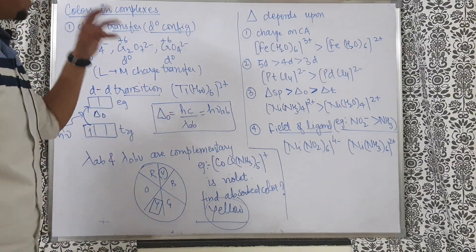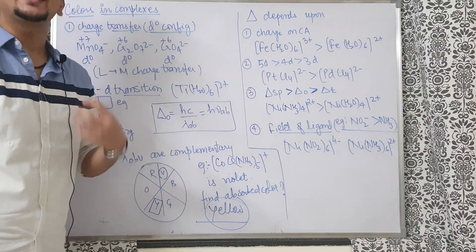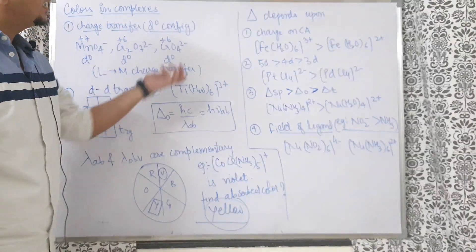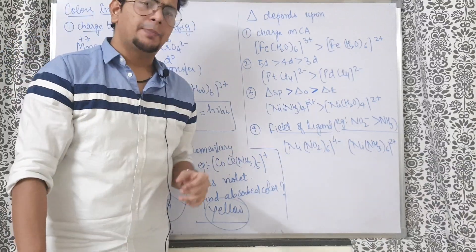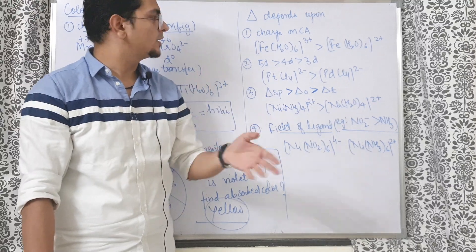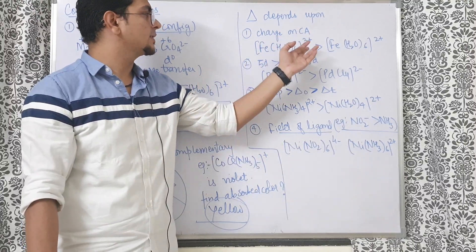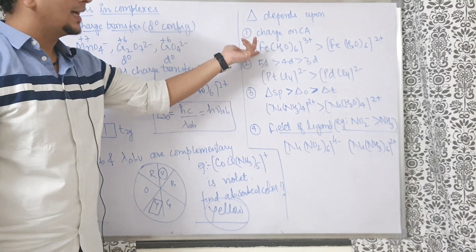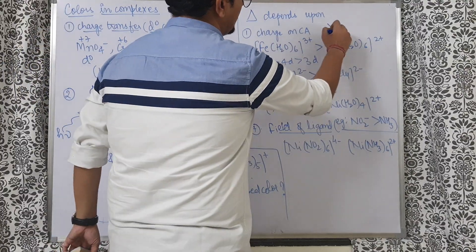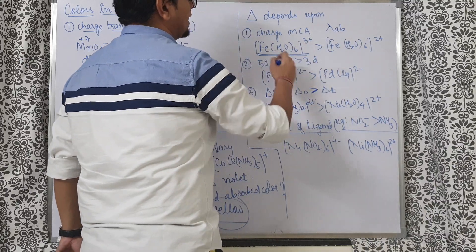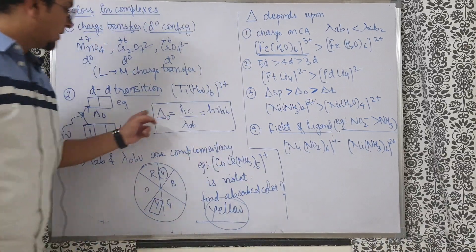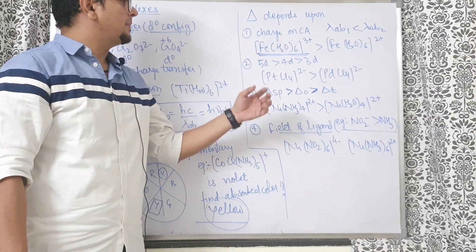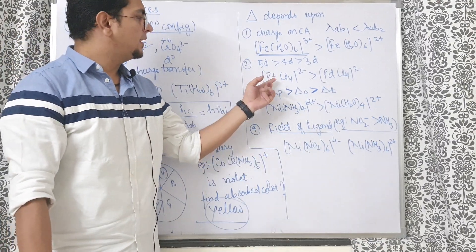To quantitatively compare λ(absorbed), we need the order of Δ. The first factor affecting Δ is charge — more charge on the metal means more crystal field splitting energy. For example, [Fe(H2O)6]³⁺ has more charge than [Fe(H2O)6]²⁺, so its Δ is larger, meaning its λ(absorbed) is smaller. Δ is inversely proportional to λ(absorbed).